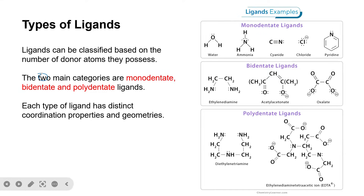For monodentate ligands — those that donate one lone pair — examples include water, ammonia, cyanide, chloride, and pyridine. For bidentate ligands, we have ethylenediamine: each nitrogen donates a lone pair of electrons, making it bidentate, meaning it donates two lone pairs. We also have acetylacetonate and oxalate as examples of bidentate ligands.